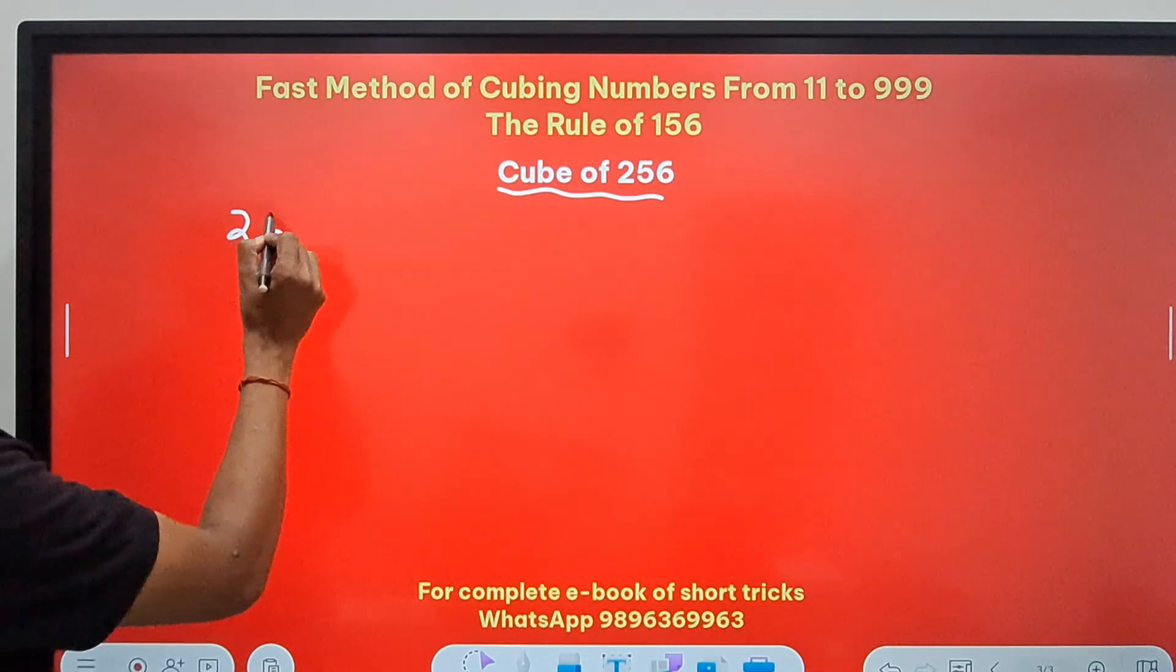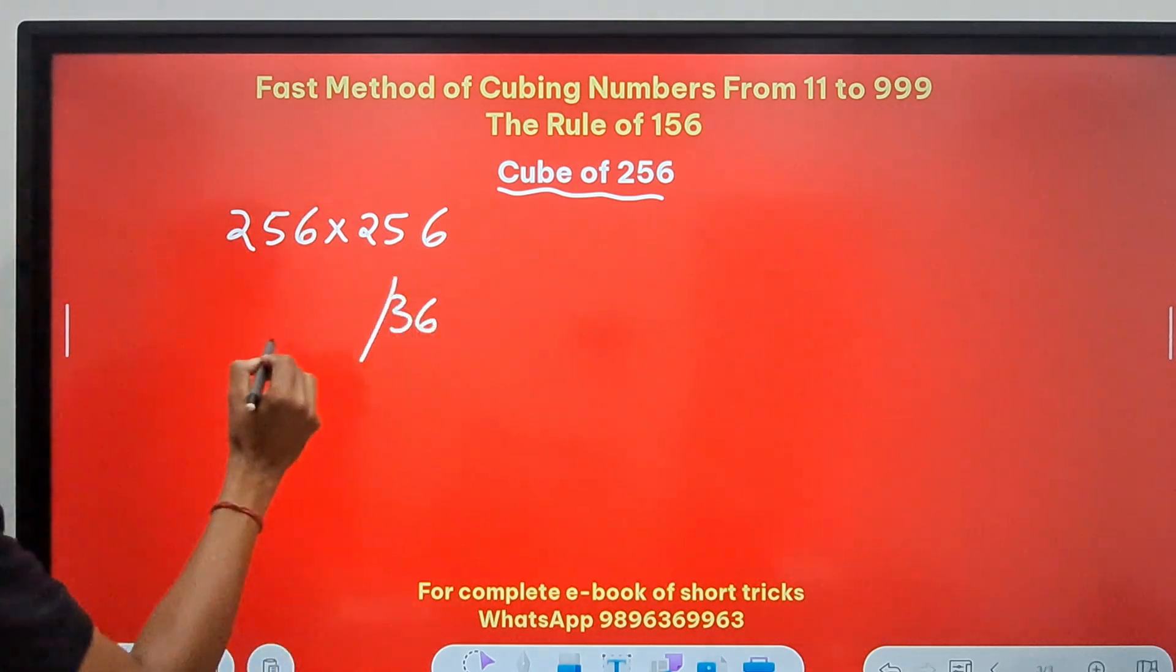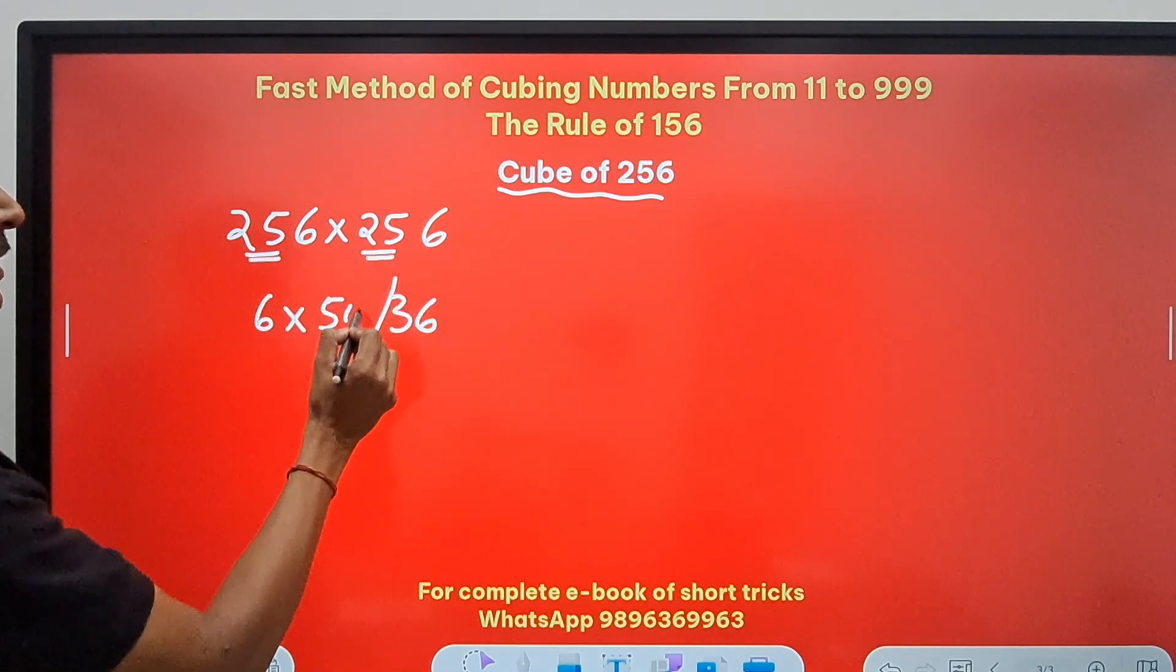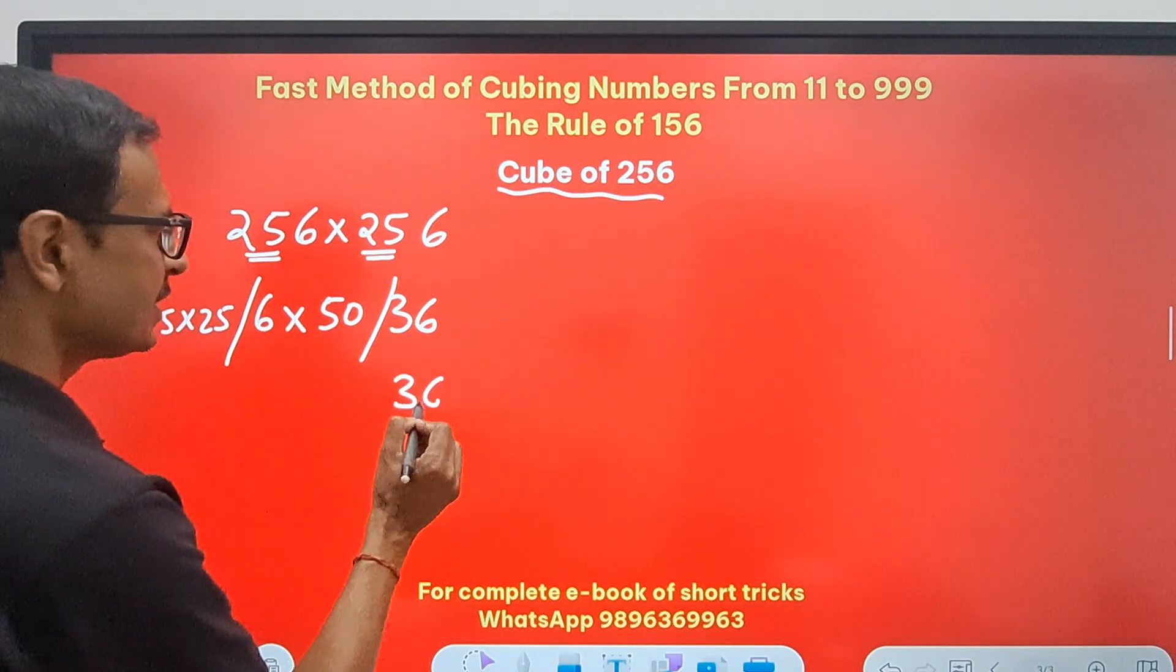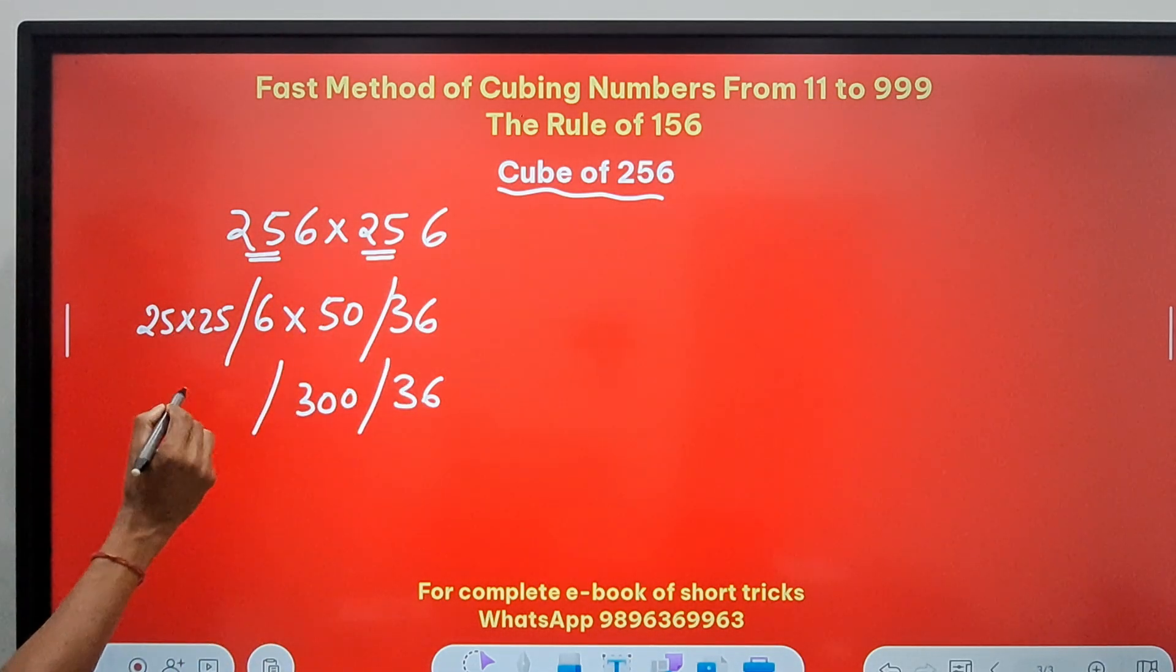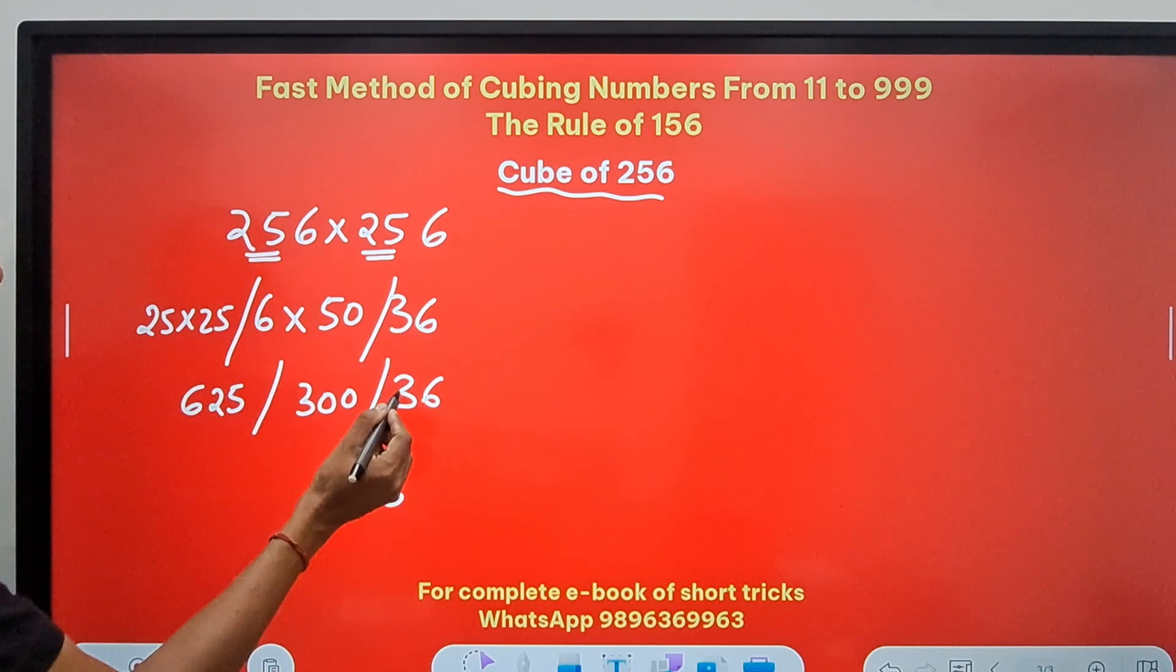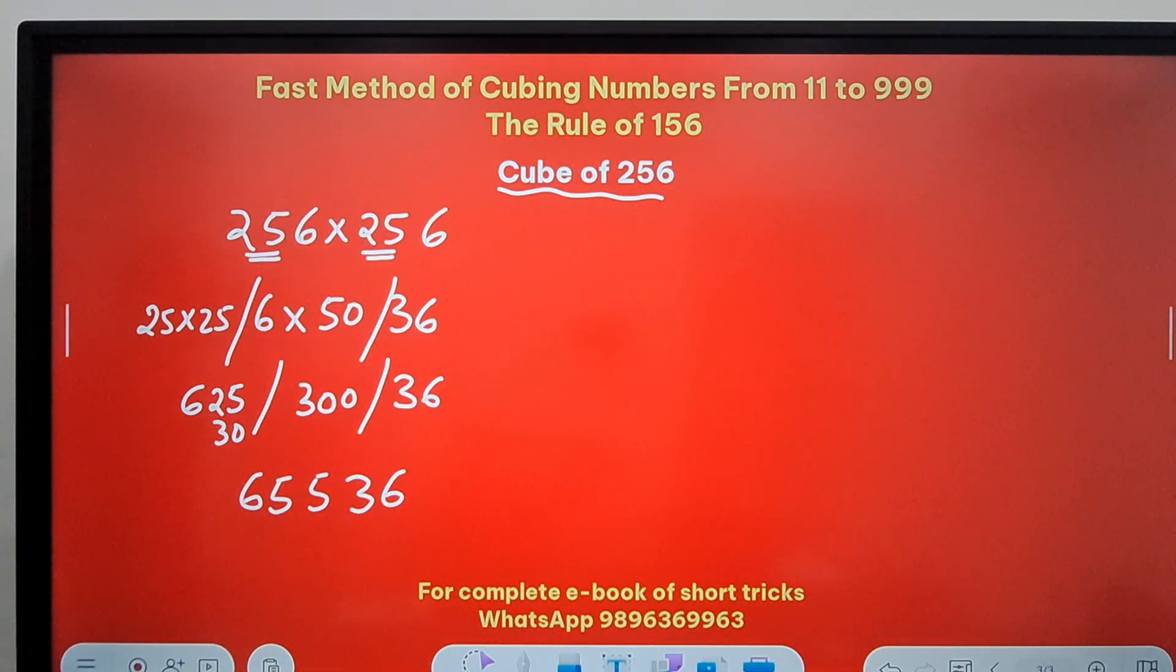You have to do 256 times 256 first, right? So write a 36, and then write 6 times what? 25 plus 25, 50. And then 25 times 25. So we get 36, and then 6 times 50 is 300, and finally 25 times 25 is 625. So 6, 3 means 303, so 3, 30 here. So this makes it 5, 5 and 6. 6, 5, 5, 3, 6. That is the square of 256.